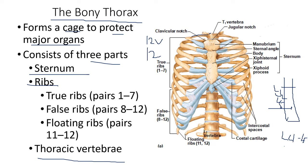The first seven ribs are called true ribs because they are directly connected to the sternum. The remaining five pairs are called false ribs — they are not directly connected to the sternum. Two of the false ribs — the 11th and 12th — are called floating ribs. They are not connected to the rest of the ribs — only 10 ribs are connected to each other, while the 11th and 12th float freely.